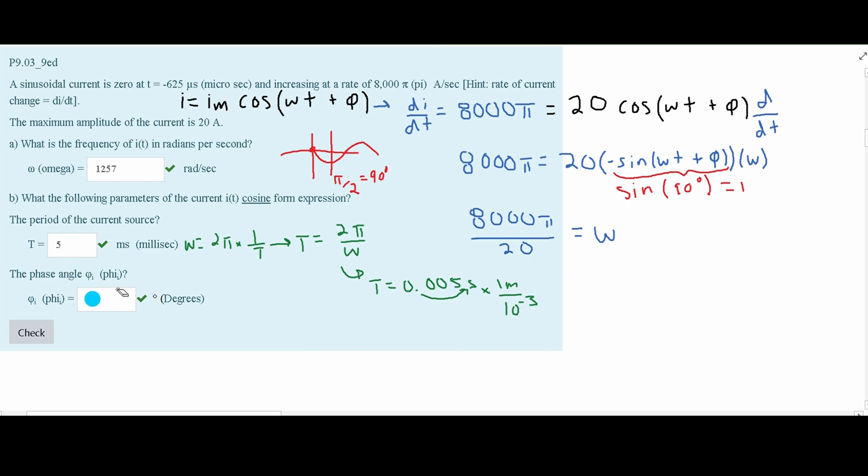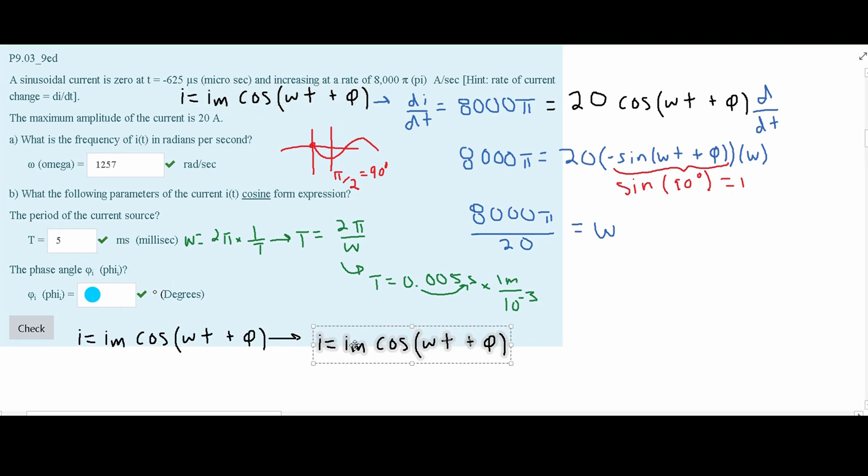Now, we need to find the phase angle. For our phase angle, we are going to take this equation that we wrote out earlier right here. And then we are going to plug in the unknowns. In the first part, we are told that our current is 0 at our time here. So what we can do is replace this i out here with a 0.